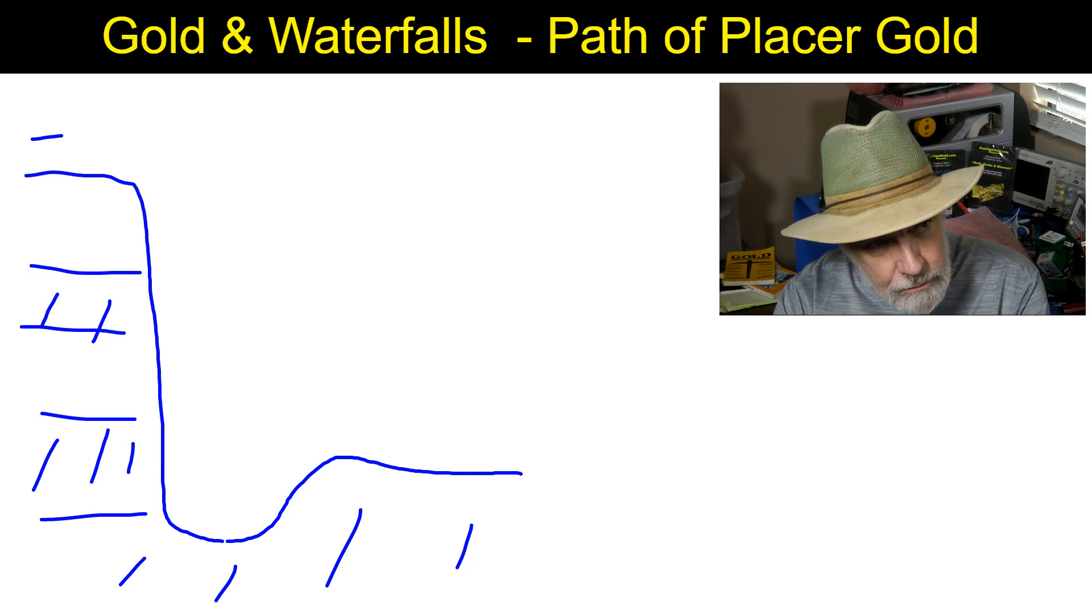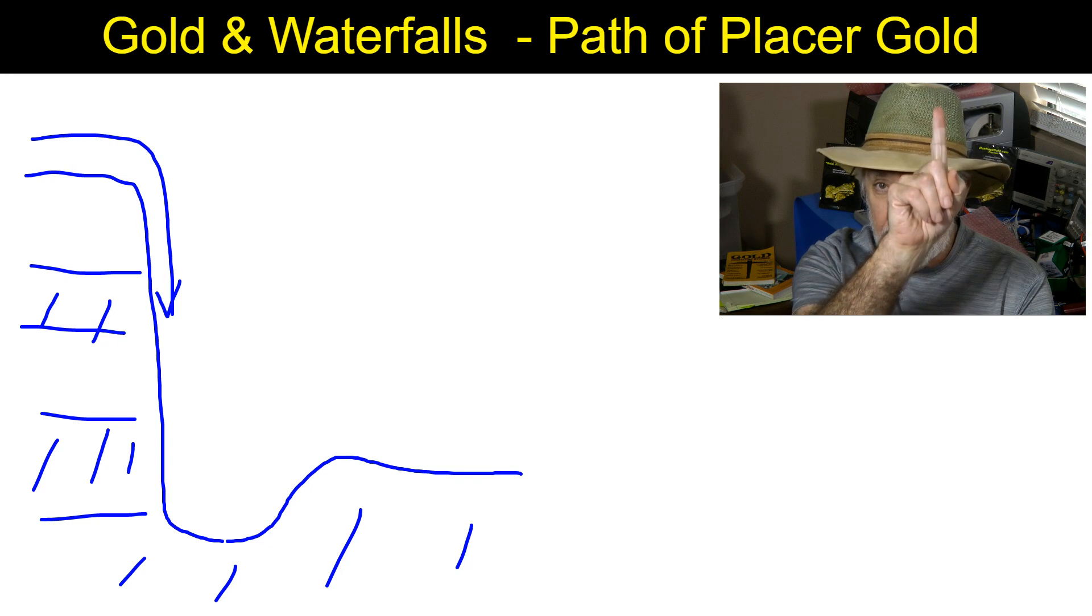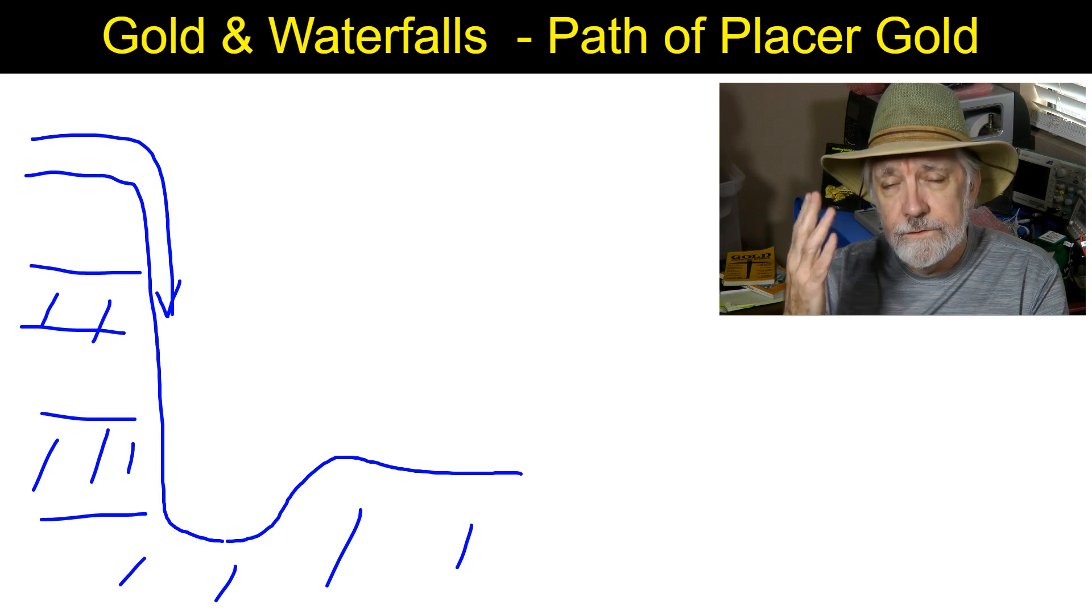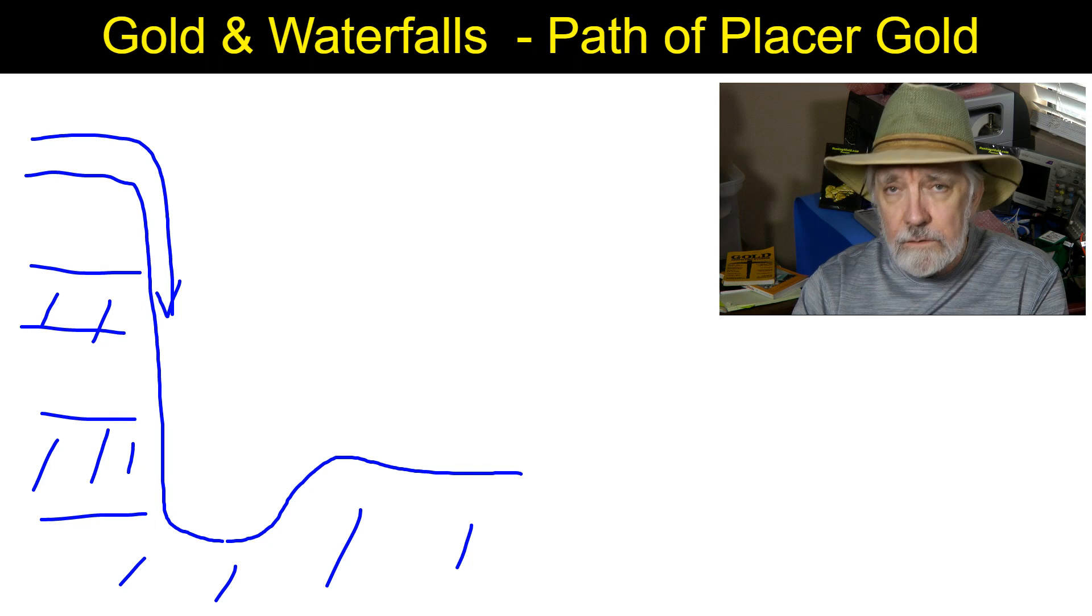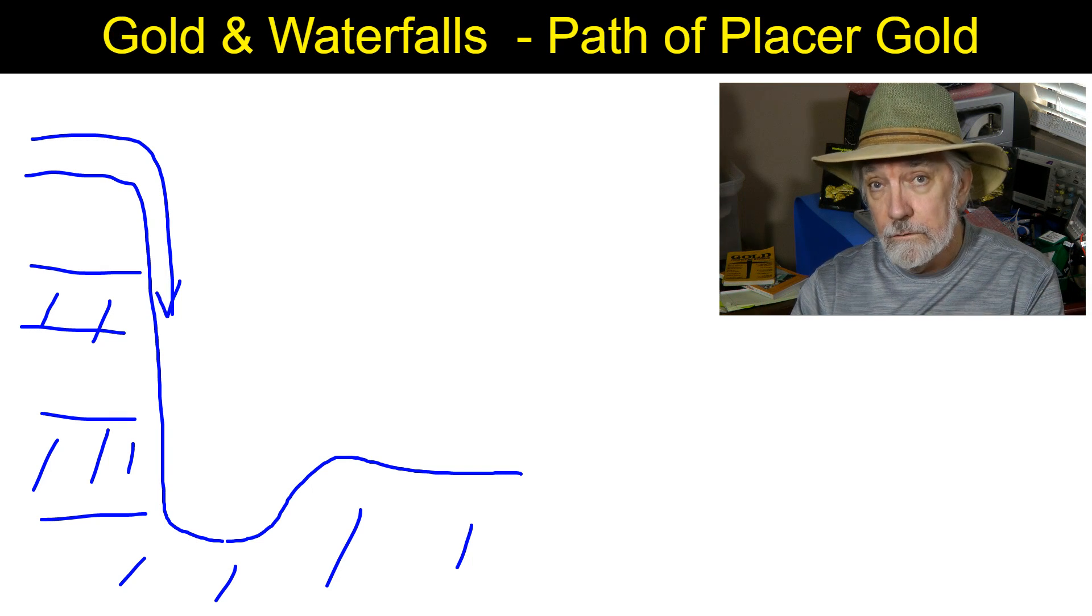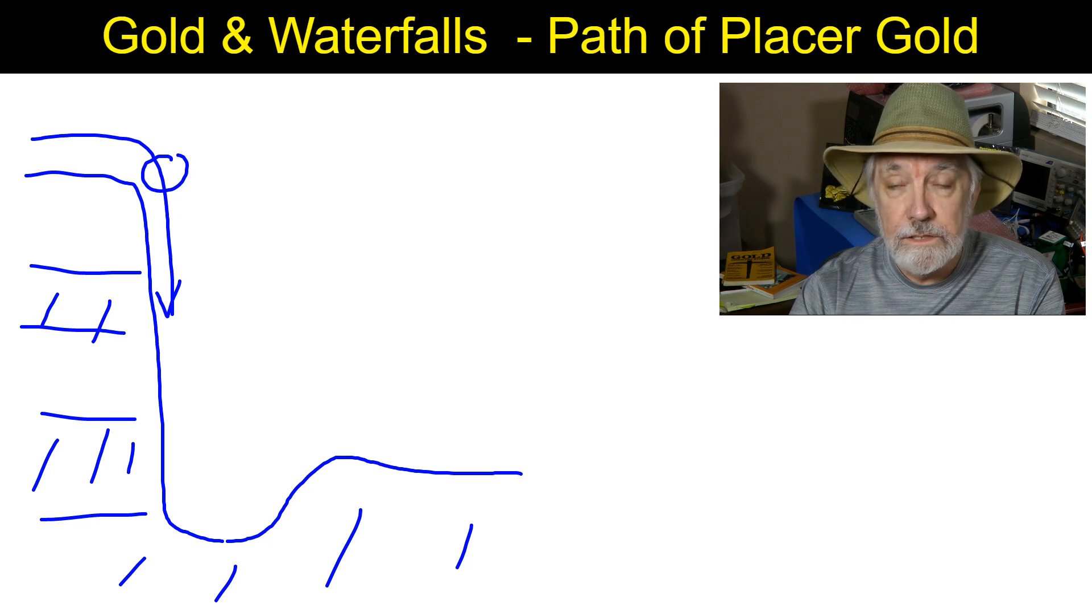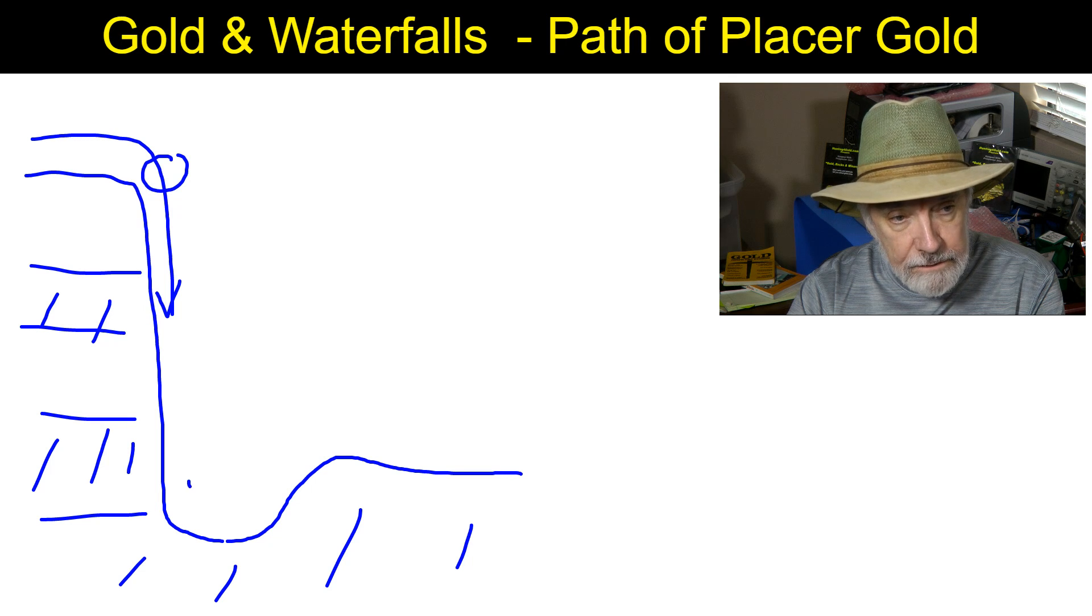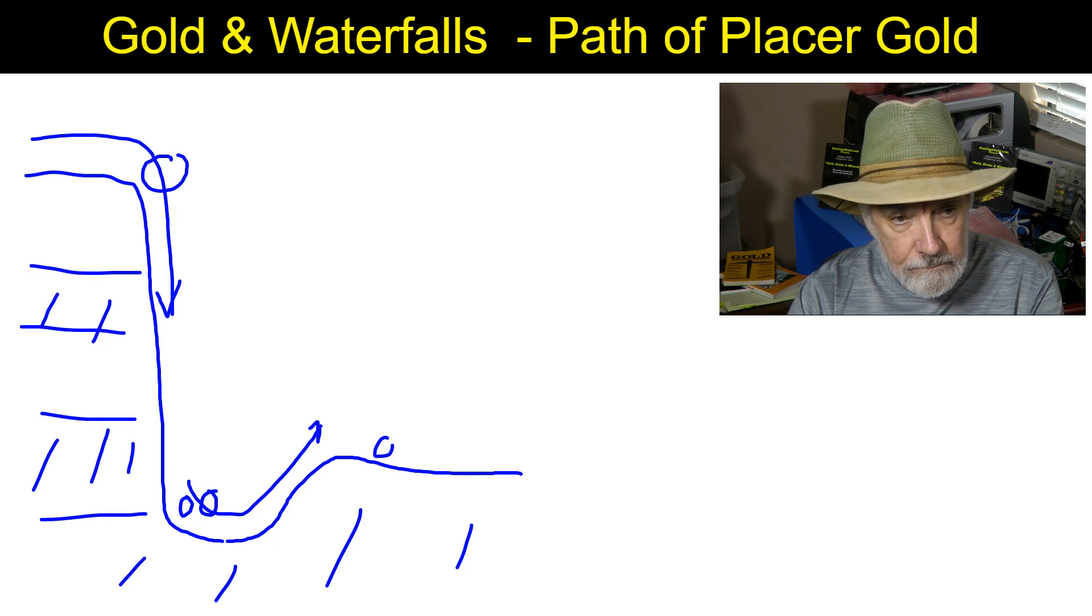As our water goes over the falls and begins its plunge we take and convert that potential energy up there to kinetic energy at the bottom. For like a hundred foot waterfall you're talking about a difference of 60 PSI. That all shows up down here in energy that basically takes anything down here at the bottom and shoots it out. So if there were cobbles or boulders they would tend to be shot out and distributed downstream from that point.